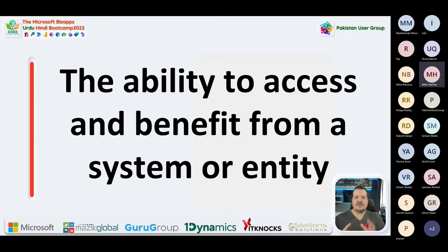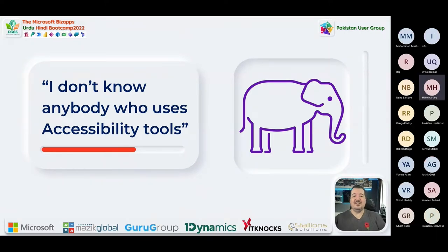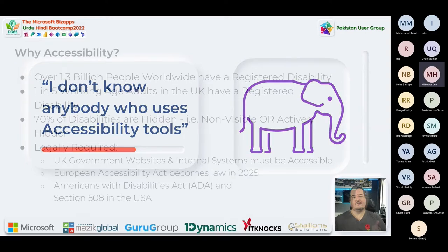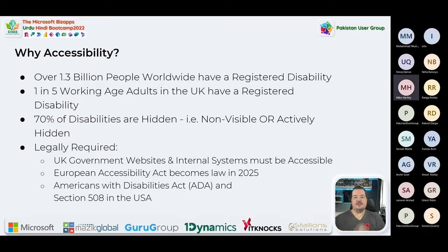There are lots of reasons why we might use accessibility tools, which makes it the elephant in the room. Most people think they don't know anybody who uses accessibility tools - but actually you probably do, and it's more likely that you do than you don't. When we look at accessibility statistics and why we need it: over 1.3 billion people worldwide have a registered disability. The key word there is 'registered.'